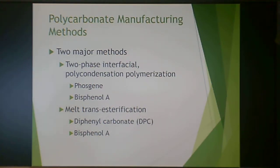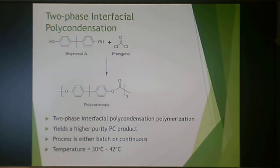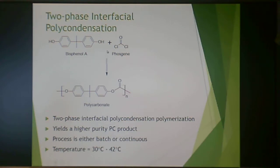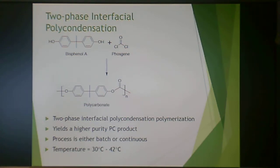Bisphenol A is a workhorse, not only in thermoplastics but also in thermosets — it's a structure you should probably know. It is reacted with phosgene to produce polycarbonate via two-phase interfacial polycondensation polymerization, which yields a high-purity polycarbonate product. This can be done by either batch or continuous polymerization, usually at 30 to 42 degrees Celsius.